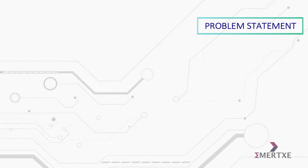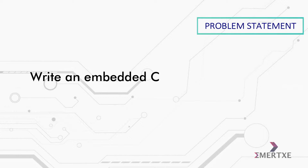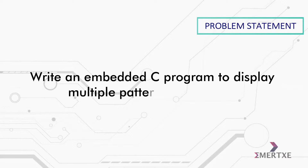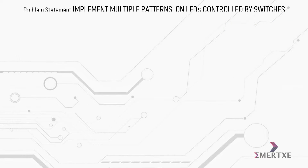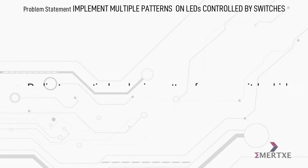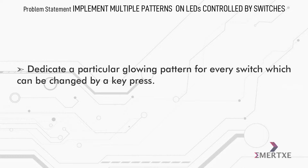In this assignment you have to write an embedded C program to display multiple patterns on the LEDs controlled by the switches. You have to dedicate a particular glowing pattern for every switch, which can be changed by a key press.